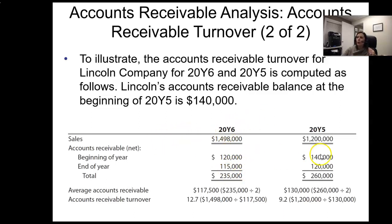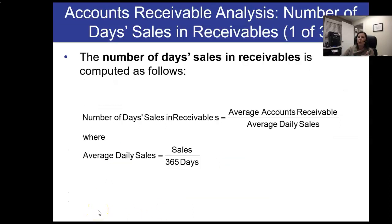The accounts receivable turnover ratio went up from 9.2 to 12.7. The higher the number, the better for this ratio. This measures how often a company was able to turn over its accounts receivable during the year — 12.7 times in 2016 versus 9.2 times. That suggests customers are paying more quickly, and the company is able to turn those receivables over faster.